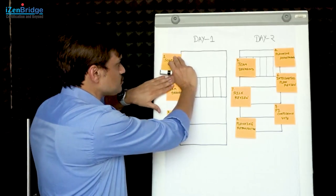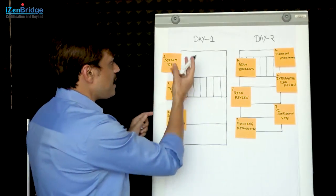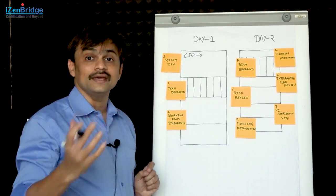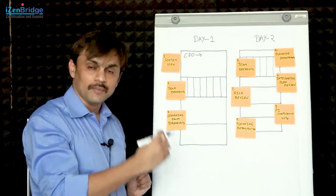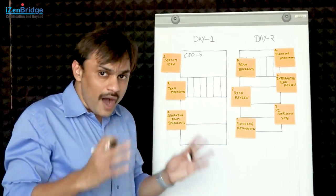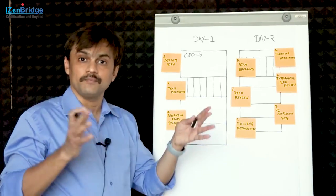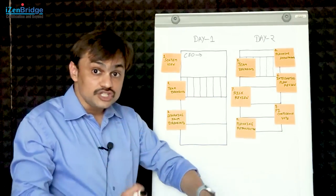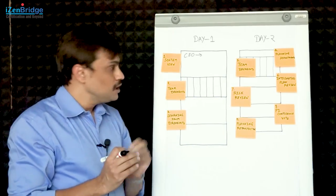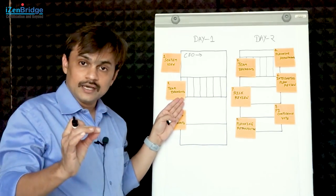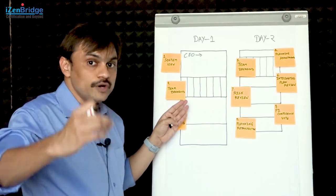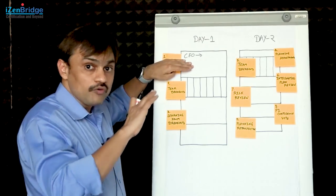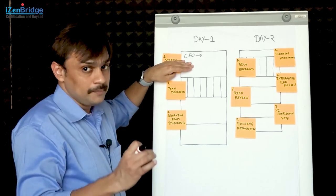There could be various ways of setting up that system view. You may have your executive come in and talk about the business context - what is happening in the competition, what is happening in the market, what opportunities are coming and why this particular PI is important, and how this PI event alignment will help us in achieving something which the organization wants to achieve. We consider it as a strategic alignment - how the work this team is going to do will give the organization a strategic advantage. This helps us understand the overall context in which we are doing this PI planning meeting.